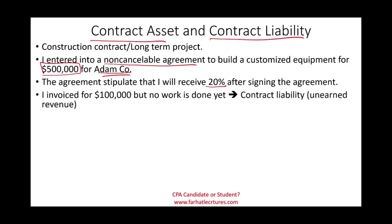Now, although I invoiced for $100,000, I did not do any work yet. This is where we have the creation of a contract liability. I did not do the work yet, but I invoiced them, and now I have the obligation to do the work. Think of a contract liability as unearned revenue — and you're going to see that at the end of the day it looks and acts like unearned revenue.